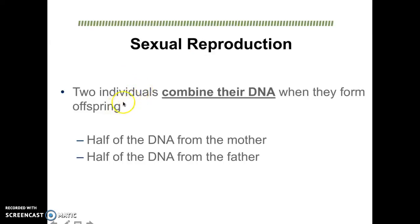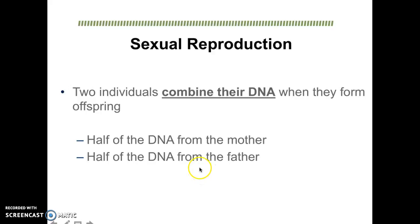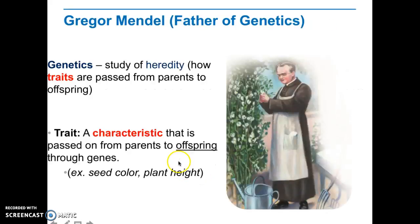When there is sexual reproduction, you basically have two individuals that are going to combine their DNA to form an offspring. Half the DNA will come from the mother and the other half from the father — that's what sexual reproduction is all about. The word genetics is the study of heredity — how traits are passed from parents to offspring.